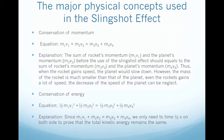The major physical concepts used in the slingshot effect. First is the conservation of momentum. The sum of the rocket's momentum and the planet's momentum before the slingshot effect should equal the sum of the rocket's momentum and the planet's momentum after. When the rocket gains speed, the planet slows down. However, since the mass of the rocket is much smaller than the mass of the planet, the rocket gains a lot of speed, but the decrease in the planet's speed is negligible.